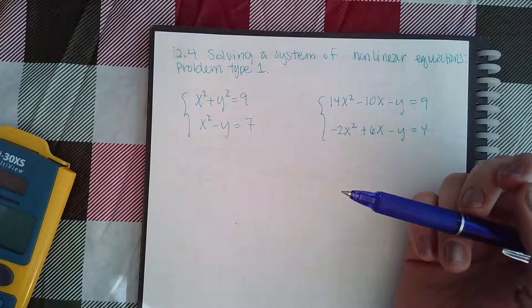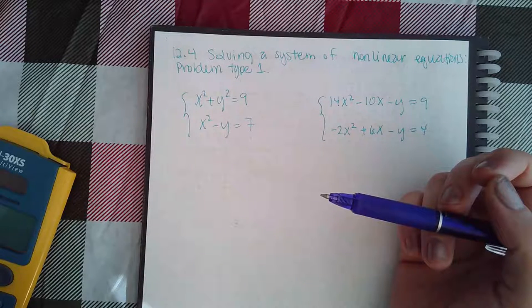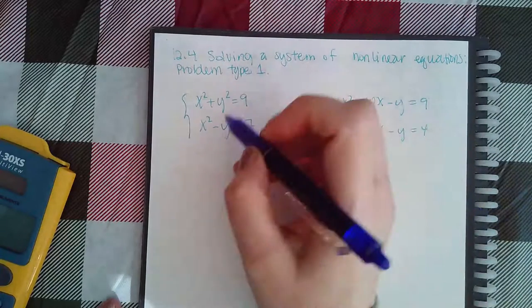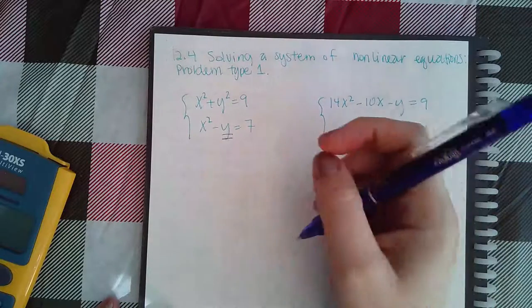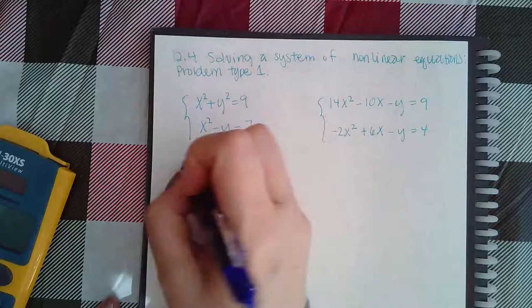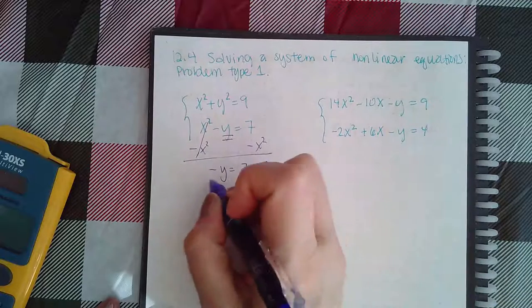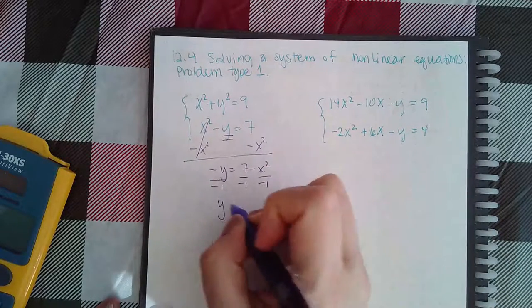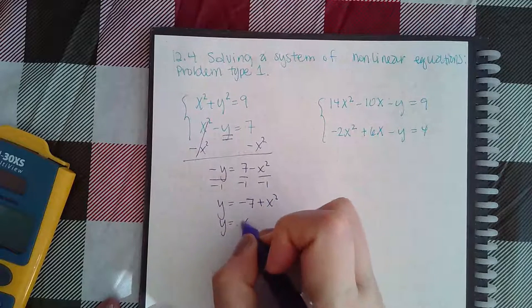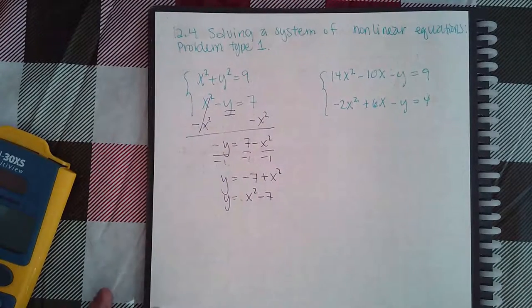You should try to choose the one variable that doesn't have an exponent on it. Since I have this term here that doesn't have an exponent, that's the one I'm going to try to get by itself. The first thing I'm going to do is minus the x² over, but I have negative y equal to 7 minus x², so I'll divide every single term by negative 1 and I get y equals negative 7 plus x² or positive x² minus 7.